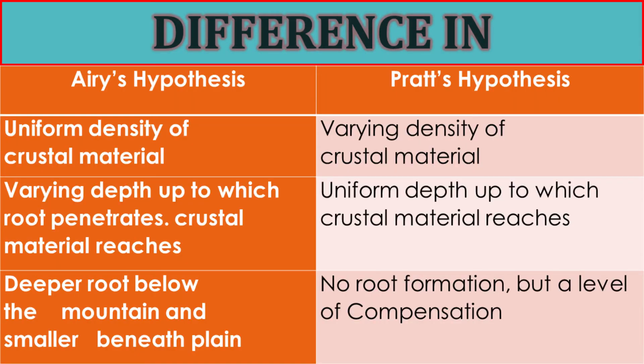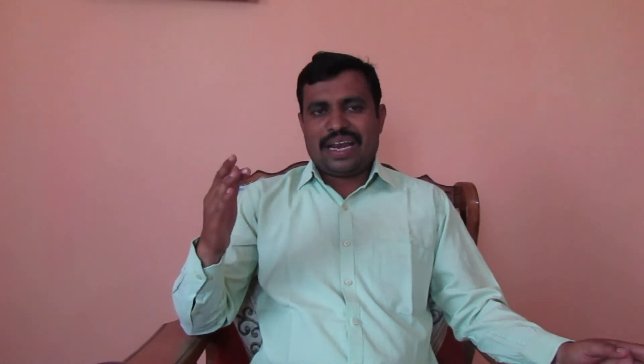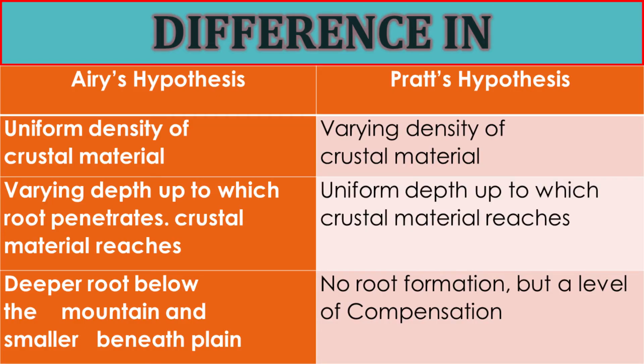Comparing Airy's model and Pratt's model: Airy states that the density of crustal material is uniform throughout, whereas Pratt states that the density of crustal material is variable from one place to another. Airy states that the depth to which crustal material's root penetrates is varying, whereas Pratt states that the depth is uniform. Airy also states that there are deeper roots below the mountains and smaller roots beneath the plains. According to Pratt, there is no root formation, but the level of compensation is found at a great depth.